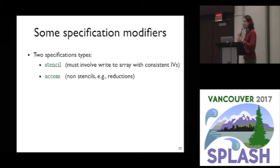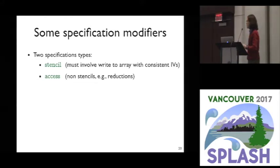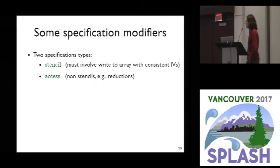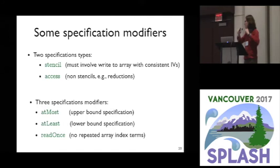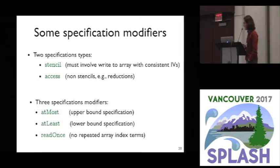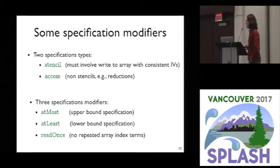There are two kinds of specification. One is for stencil computations, where you're writing into an array using induction variables consistently. There are also access specifications, useful for reductions where you're reading from an array but not necessarily writing back — maybe collecting some value. We also have modifiers: upper bound and lower bound specifications for approximation, and a special 'read once' modifier indicating that each array index pattern has no repeated indices, which is quite important for getting rid of bugs.